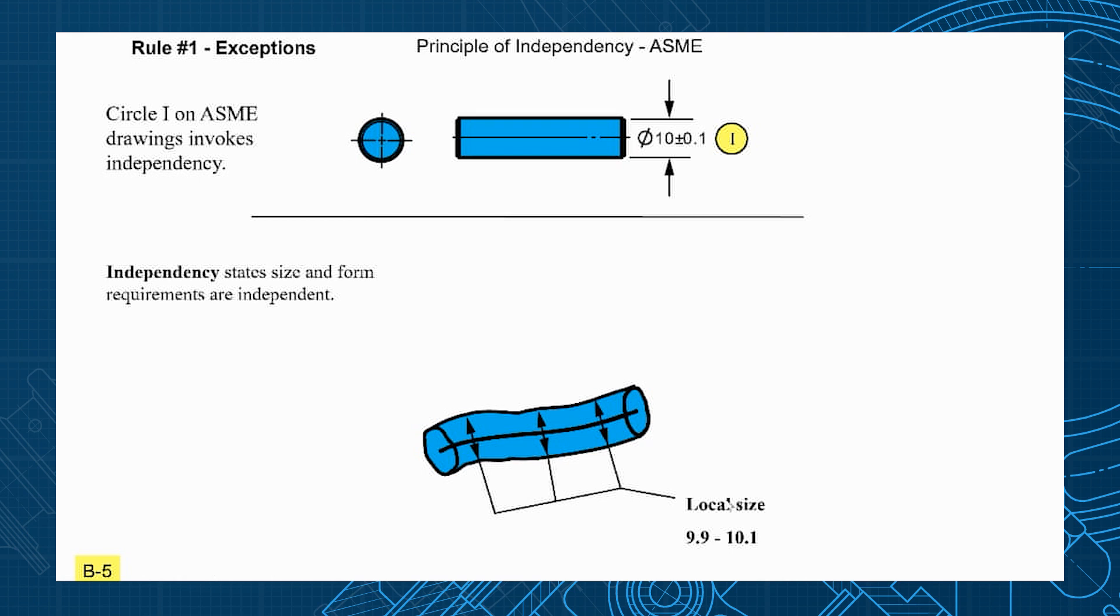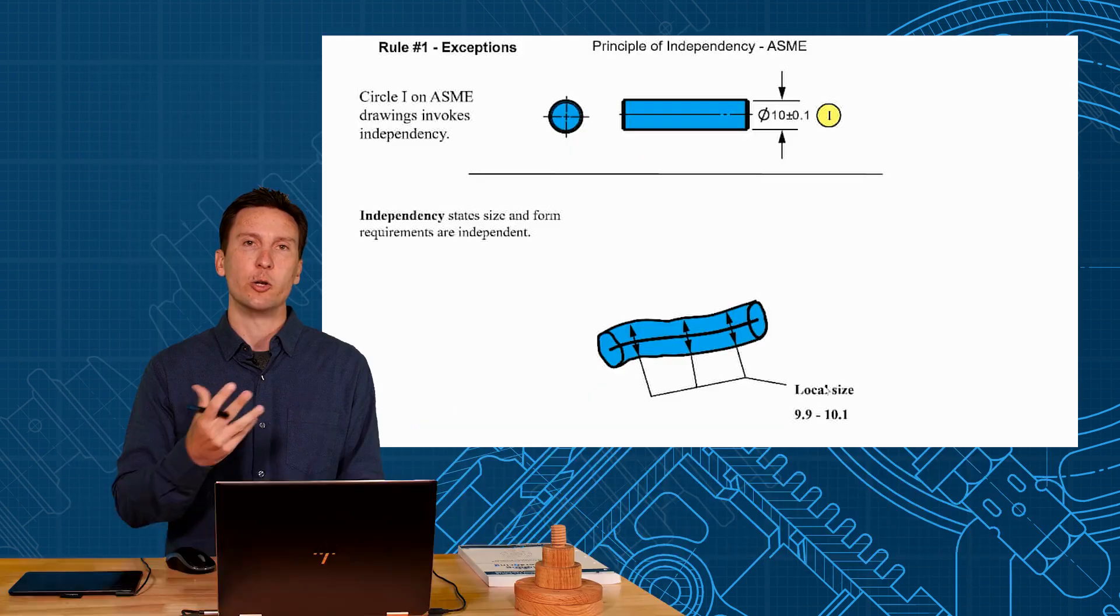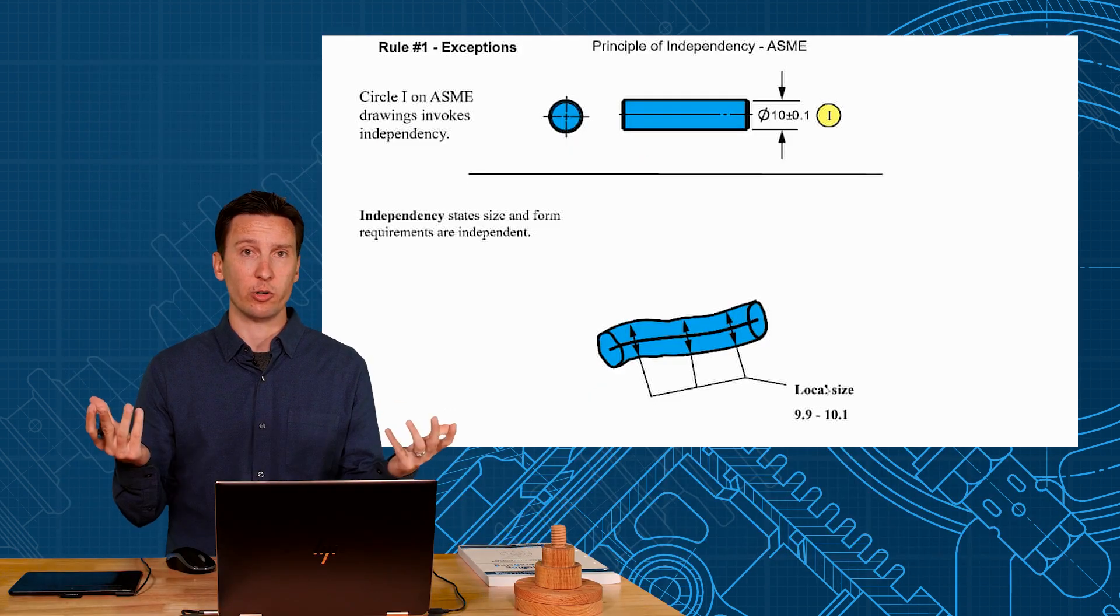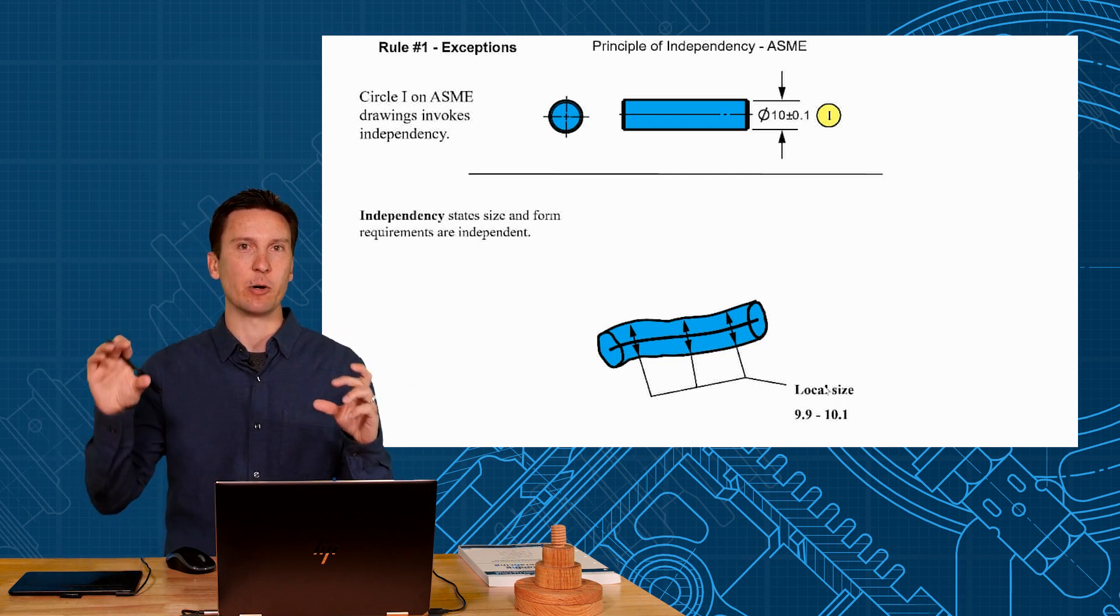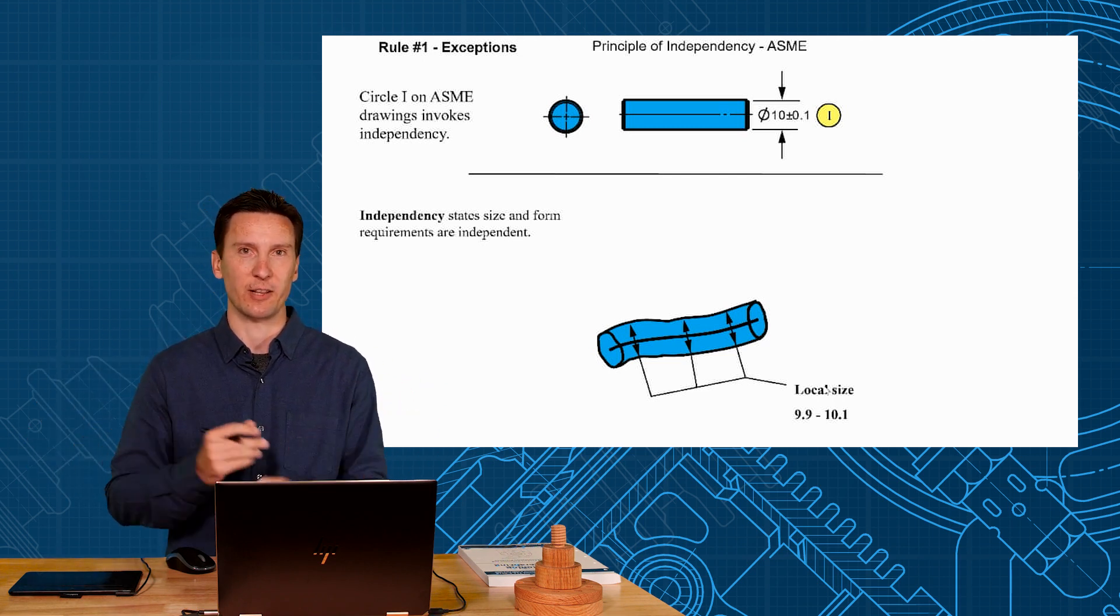Now do be aware that this part could now look like a pretzel, a little wet noodle, as long as each local size is still controlled to the size limits. Notice that the form is no longer controlled at all so you need to have some other control that would limit how much form variation you could have or it could look like anything.